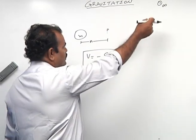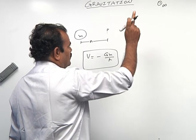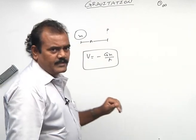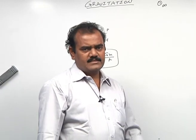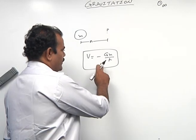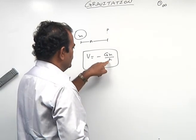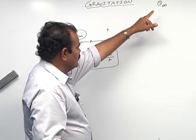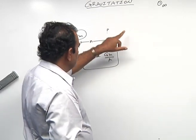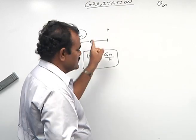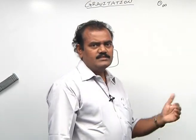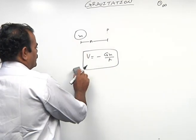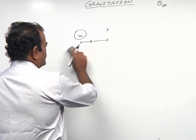Whenever that unit mass is brought from infinity to the point P and it is approaching mass M, then automatically gravitational potential decreases. The maximum value is zero when r is taken as infinity, and thereafter when it is approaching this mass, gravitational potential decreases. Next, when r becomes infinity, V = -GM/r - the gravitational potential definition is over.